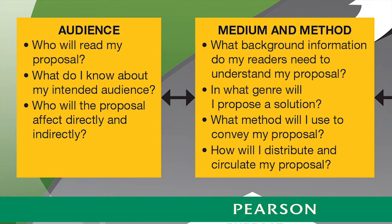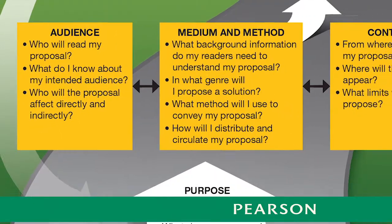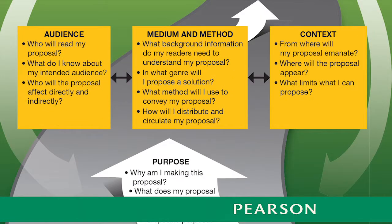Likewise, I always want to show students that when thinking about audience, medium, and method, they should also start to question the context of their proposal. Where will it occur? Where will it appear? What limits their proposal? What can be proposed? Each of these kinds of questions should be asked in conjunction with one another, as the answers to these questions might change how the questions get asked.